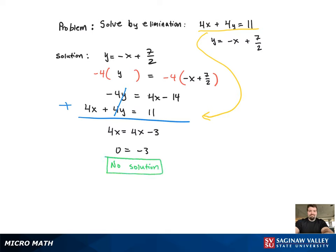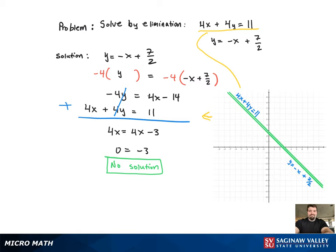When that happens, you just want to see if it's a true or false statement. Since it's 0 equals negative 3, that's a false statement, which means there's no solution.